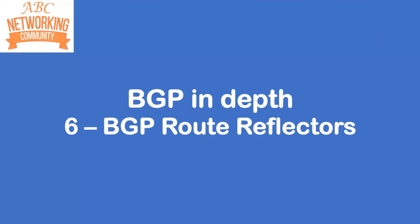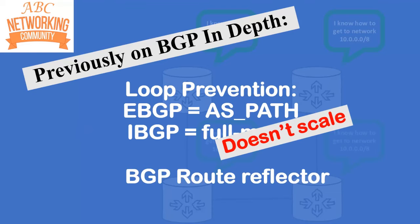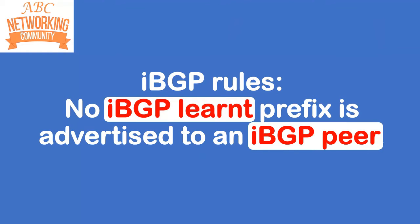Hello, this is Joe Neville and welcome to this video on BGP route reflectors. This video follows on closely from my previous two videos dealing with the theme of loop prevention in BGP. In video 4 I discussed eBGP using AS Path to stop prefixes looping. In video 5 I looked at iBGP, explained why full mesh doesn't scale, and how BGP route reflectors can help. I recommend watching those videos first, linked in the description, to understand route reflectors in the wider context of loop prevention.